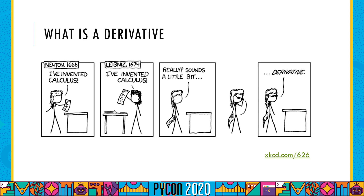So we start off talking about the derivative. The derivative of a function is the rate of change of that function. The idea turns out to be important in science. For example, efficient algorithms for maximizing or minimizing functions using the derivative are central to machine learning in general, and deep learning in particular. Speaking broadly, the derivative provides far more information than the function alone. It's the difference between knowing that your friend is at Grand Central Station and knowing that your friend is at Grand Central Station heading north.